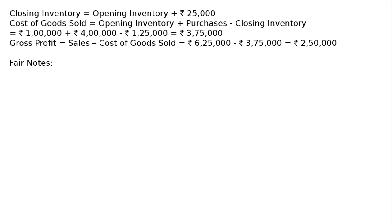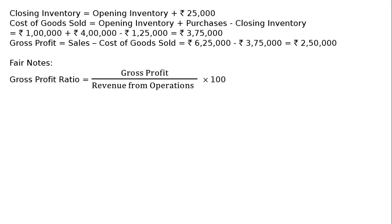Gross profit ratio equals gross profit divided by revenue from operations, multiplied by 100. Substituting: rupees 2 lakhs 50 thousand divided by rupees 6 lakhs 25 thousand, multiplied by 100, equals 40 percent.